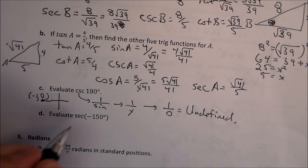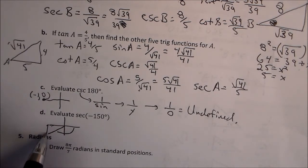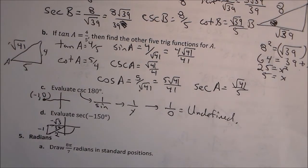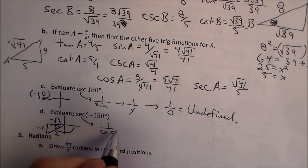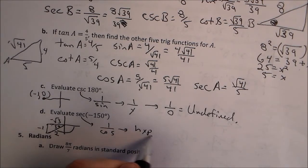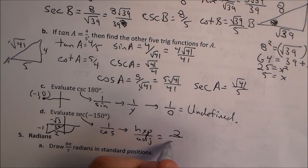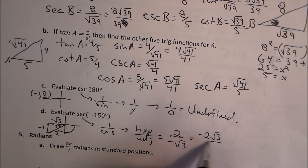For secant of negative 150 degrees: we're going in the negative direction but don't quite reach negative 180, so we're in quadrant three with a 30 degree reference angle. The sides are 1, root 3, and 2, with both x and y directions being negative. Secant is the reciprocal of cosine, and cosine is adjacent over hypotenuse, giving us negative root 3 over 2 for cosine, so secant is negative 2 over root 3, which rationalizes to negative 2 root 3 over 3.